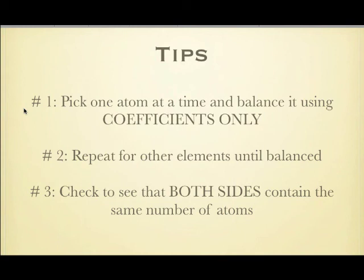That's really important - coefficients only are the only thing we're going to put on there. You cannot change the molecules. Leave the molecule alone. You can add more of them, coefficients, but you cannot change the subscripts in the molecule itself. Pick one atom at a time, balance it using coefficients, repeat for every other element. You just go back and forth in a trial and error type situation until everything is balanced and both sides have the same number of atoms.